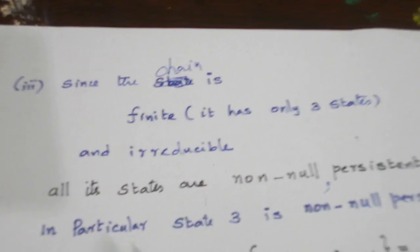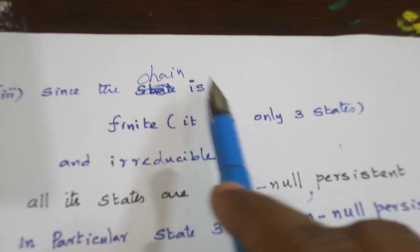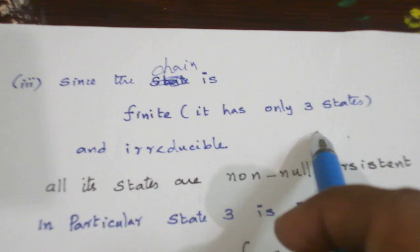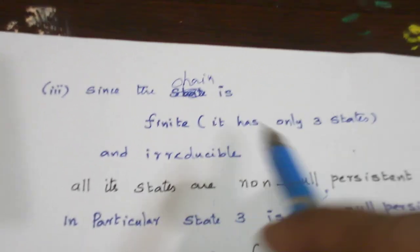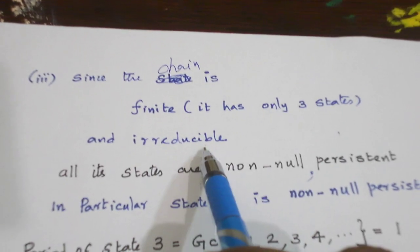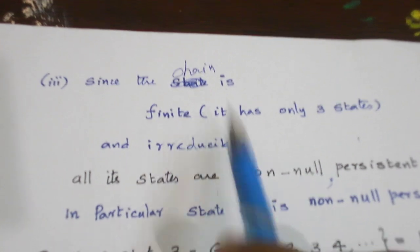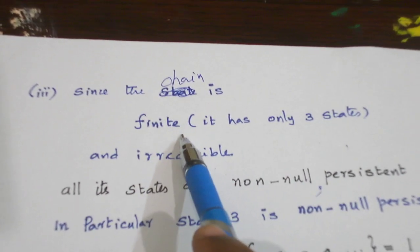Now let us see whether the state 3 is ergodic. Now the chain is finite. It has only 3 states: state 1, 2, 3 and moreover we have seen it is irreducible in the second part of the question. So we have a theorem.